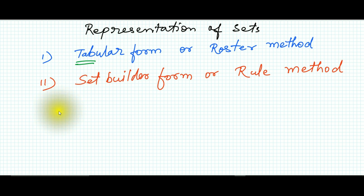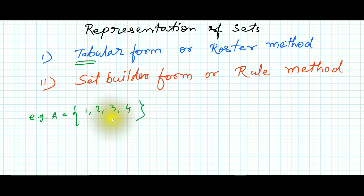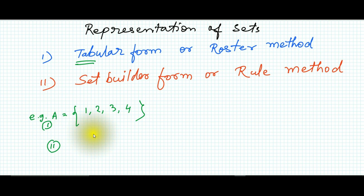For example, in tabular form, suppose A is a set of the first four natural numbers. We can write this set in tabular form as A = {1, 2, 3, 4}. This is also called the roster method.